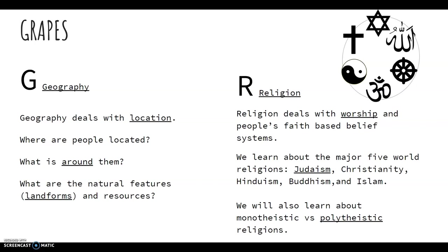R stands for Religion. Religion deals with worship and people's faith-based belief systems. In this course, we learn about the five major world religions: Judaism, Christianity, Hinduism, Buddhism, and Islam. Judaism, Christianity, and Islam all have ties to Abraham.